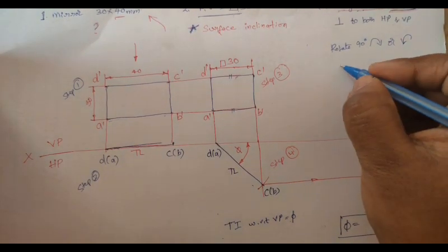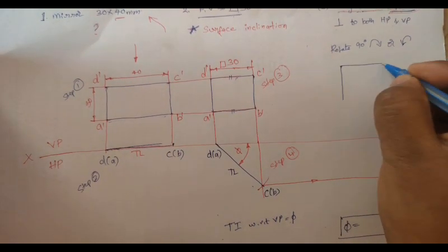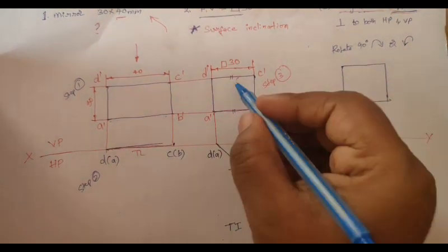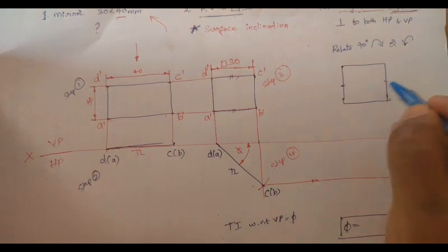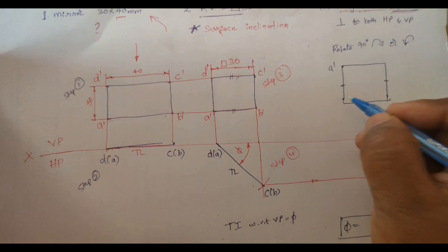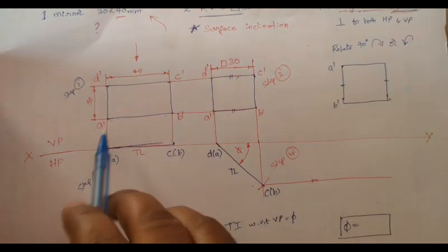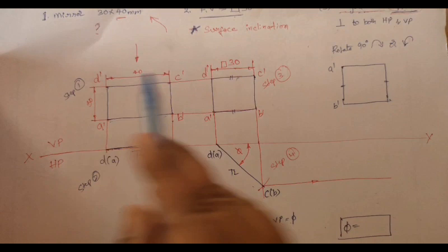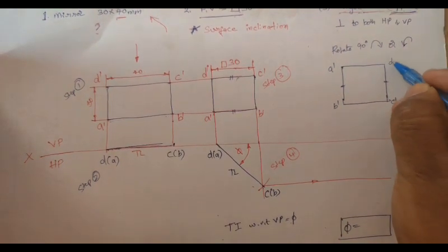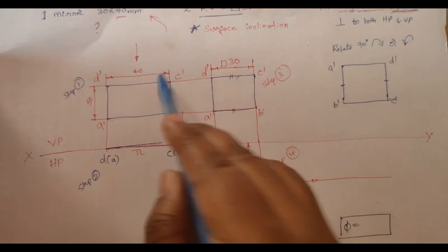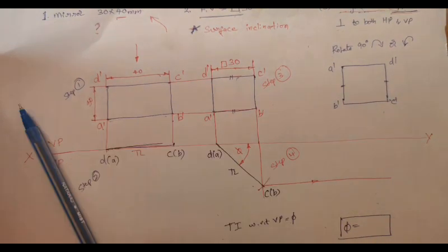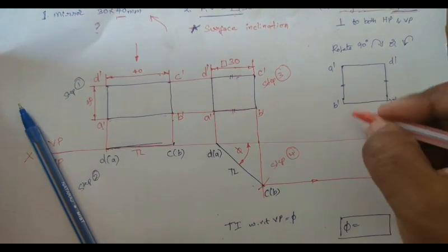The longer edge is going to be parallel, I am going to make it perpendicular. C dash, D dash. Then I am going to project it downwards. You can rotate either clockwise or anticlockwise. So we shall project it till here.